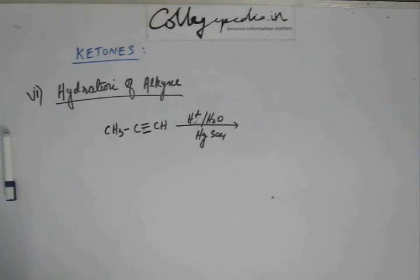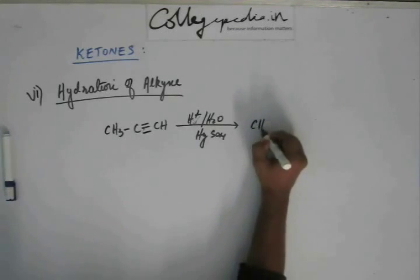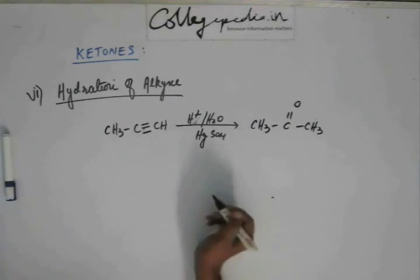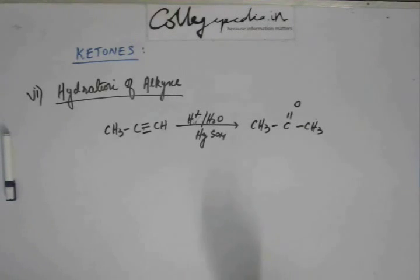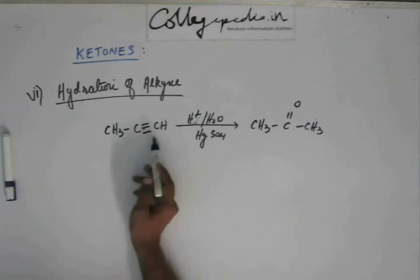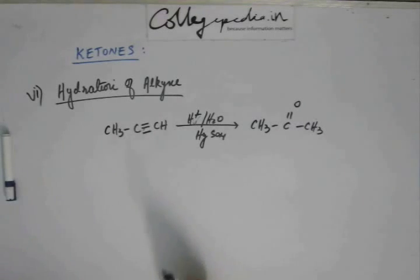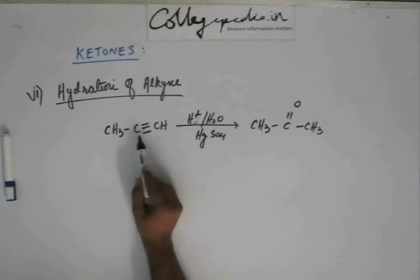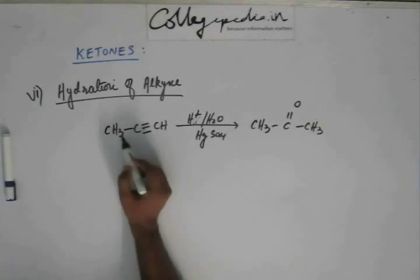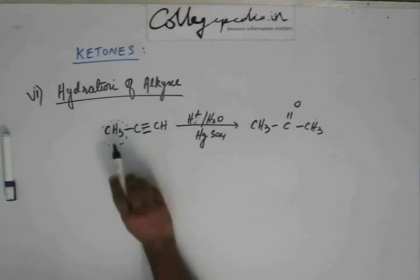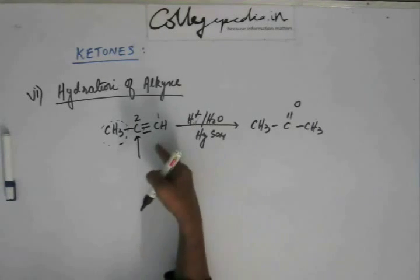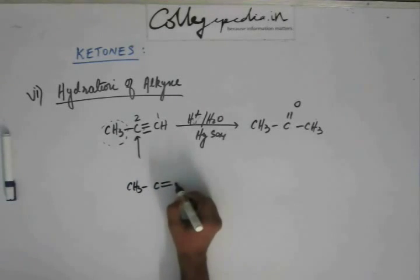The product here would be a ketone — in this case, acetone. In the first step, H⁺ approaches the alkyne and one carbon donates its electron, generating a positive charge. That plus charge is generated on the inner carbon, because the inner carbon has greater electron stabilization by inductive effect and hyperconjugation. The methyl group stabilizes the positive charge on carbon 2, so H⁺ goes to carbon 1.